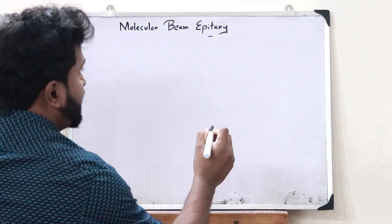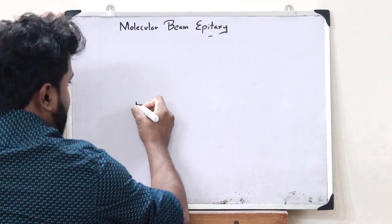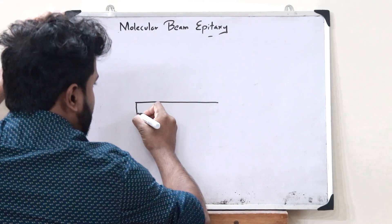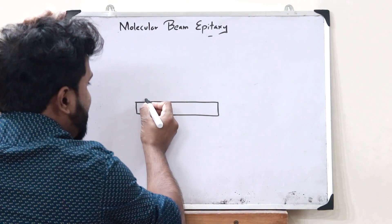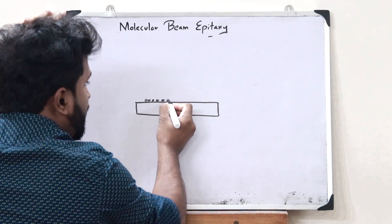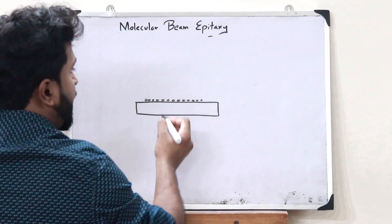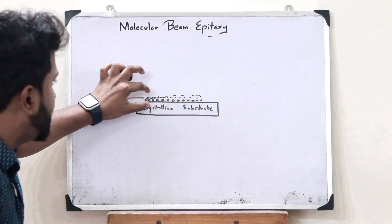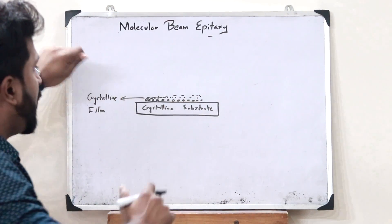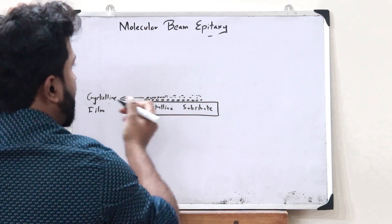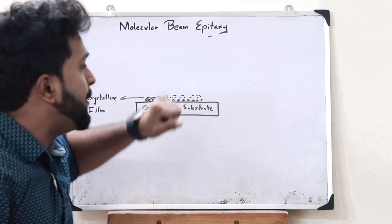So epitaxy is a process by which when we take a particular substrate like this, the growth of a thin crystalline film on top of a particular crystalline substrate is simply what you refer to as epitaxy. Here the growth of a very thin crystalline film on top of a crystalline substrate is simply what you refer to as epitaxy.